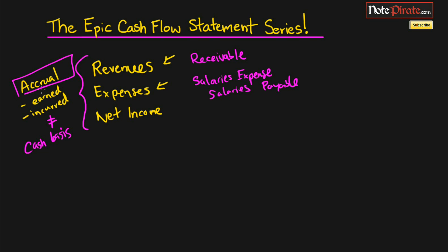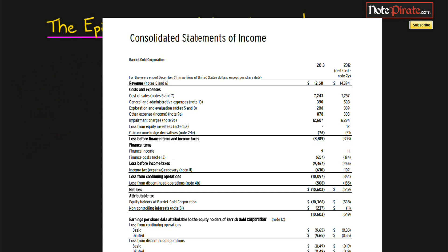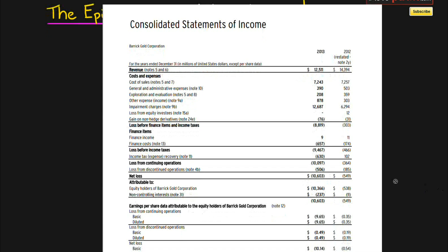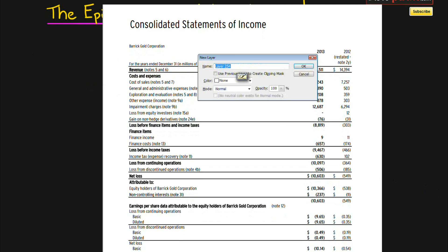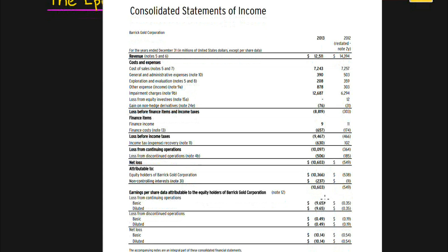Let's move on and actually look at an income statement from a real company. Right here I have an income statement from Barrick Gold, which is a gold mining company. The only figure I wanted to go over is the net loss figure — since it's in millions of dollars, this comes to 10.6 billion dollars of a net loss.